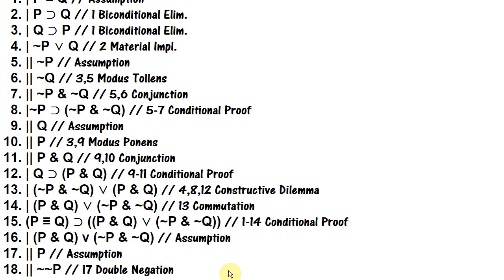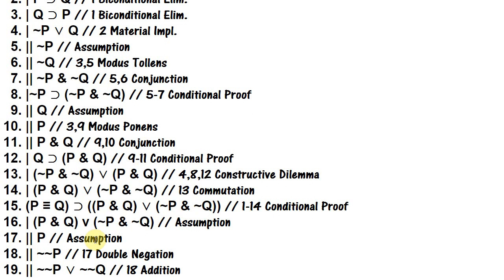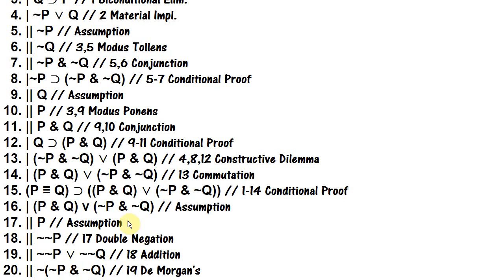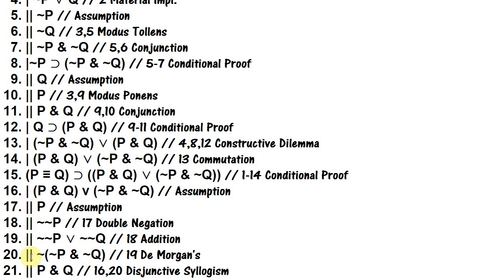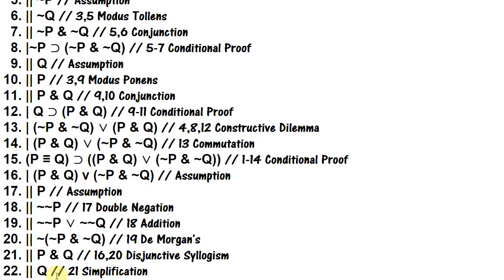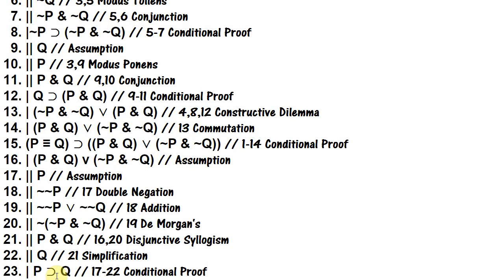We double-negate p because we have a disjunction and we want to get one of the disjuncts — specifically 'p and q' — by denying 'not p and not q.' What we need is 'not (not p and not q).' We can get that through DeMorgan's, but first we use addition to get 'not not p or not not q.' Then DeMorgan's gives us 'not (not p and not q).' That allows us to use disjunctive syllogism: from our disjunction on line 16 and the denial on line 20, we get 'p and q.' From there we simplify to get q, close the conditional proof, and get 'if p then q.'